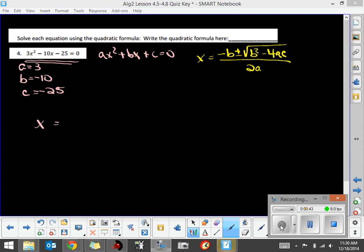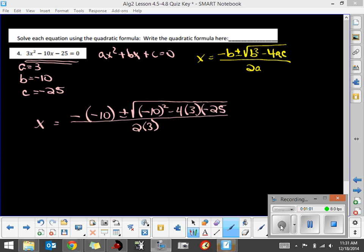So x equals the opposite of b, which is negative 10, plus or minus the square root of negative 10 squared minus 4 times a, which is 3, times c, which is negative 25, all over 2a, which is 2 times 3. We've plugged them in, now we're going to chug out some numbers.